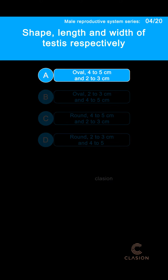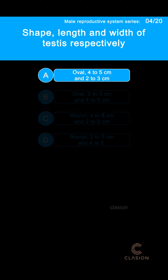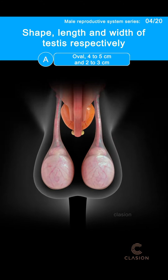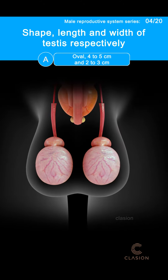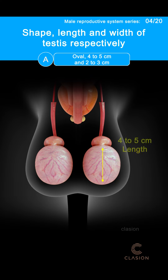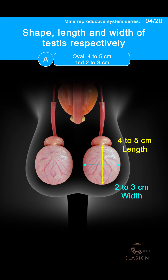The correct answer is Option A: Oval, 4-5 cm and 2-3 cm. In human adults, each testis is oval in shape with a length of about 4-5 cm and a width of about 2-3 cm.